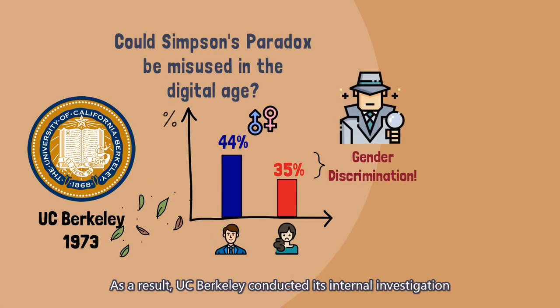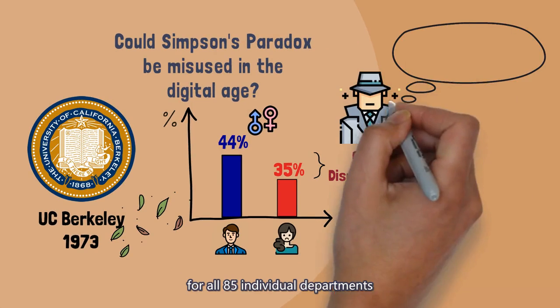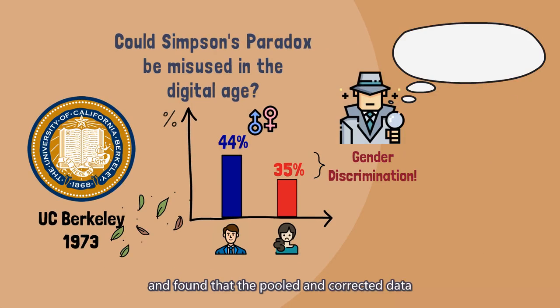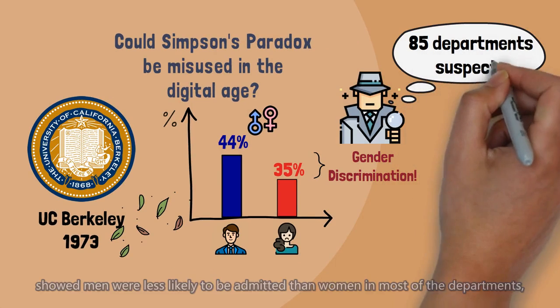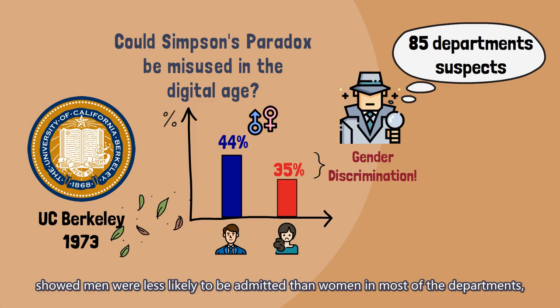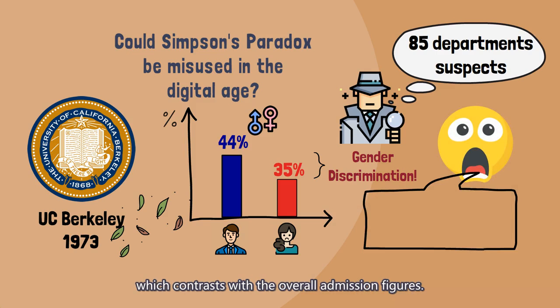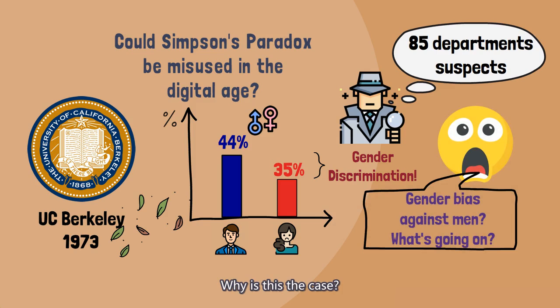As a result, UC Berkeley conducted its internal investigation for all 85 individual departments and found that the pooled and corrected data showed men were less likely to be admitted than women in most of the departments, which contrasts with the overall admission figures. Why is this the case?